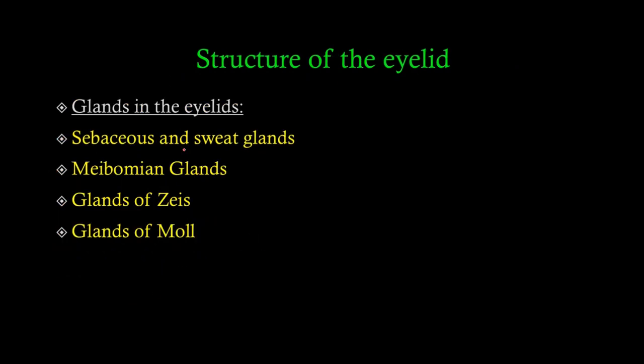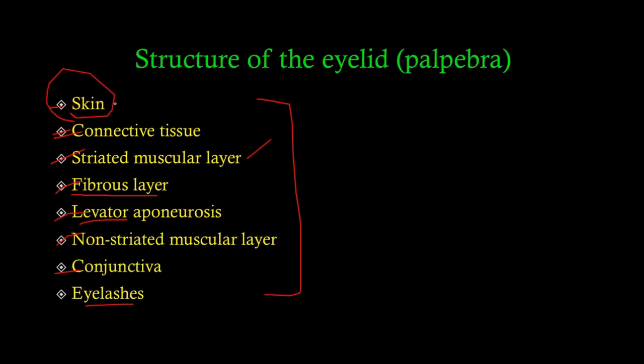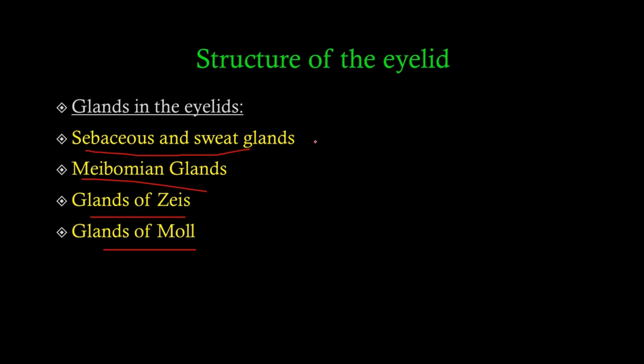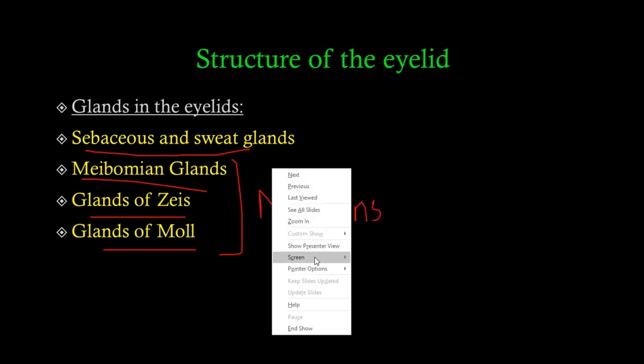Regarding the glands of the eyelid structure, there are three types you really need to know: the Meibomian glands, the glands of Zeiss, and the glands of Moll. These are sebaceous and sweat glands located on the margins of the eyelid. Let's look at the anatomy — imagine the eye from a side view, with upper and lower eyelids and eyelashes.